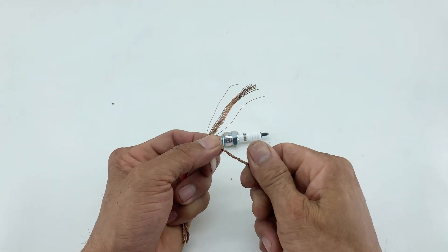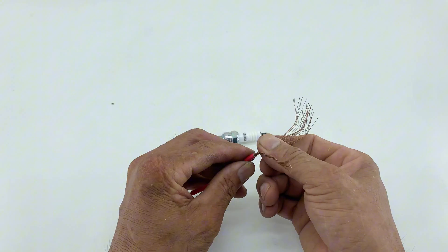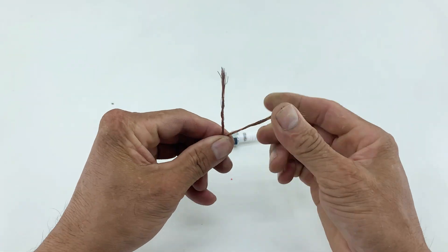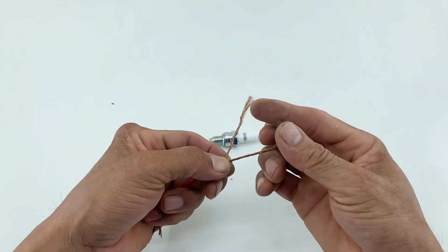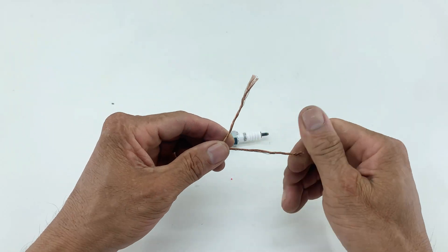This method helps increase the grip between wires when connecting, ensures stable current flow, reduces the risk of overheating at the joint, and minimizes the chance of electrical short circuits during use.